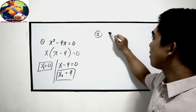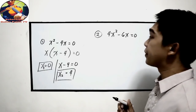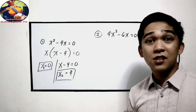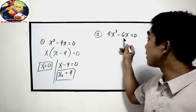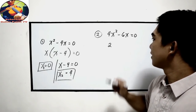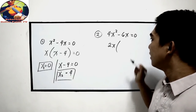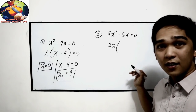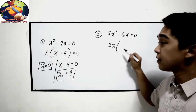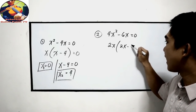To further understand, let's have example number 2: 4x squared minus 6x is equal to 0. Find the common factor. Starting with the coefficient: 4 and 6, the common factor is 2. For the variable, the lowest exponent is x, so copy x. To find the other factor: 4x squared divided by 2x is 2x. Negative 6x divided by 2x is negative 3.